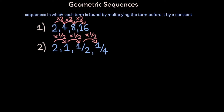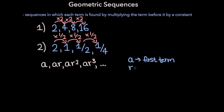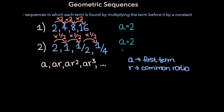In general, geometric sequences can be written in the following form, where a represents the first term in the geometric sequence, and r represents the common ratio, which is the number you need to multiply a term by to get the next term. So in both geometric sequences that we've written, a, the first term, is equal to 2. In the first geometric sequence, the common ratio r is equal to 2 as well, while in the second one, r is equal to 1 half.